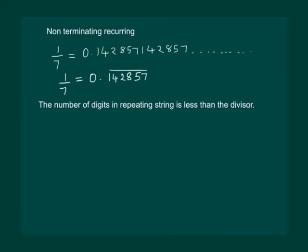So here we notice that the number of digits in the repeating string is less than the divisor. Here the divisor is 7 and the repeating string has 6 digits.